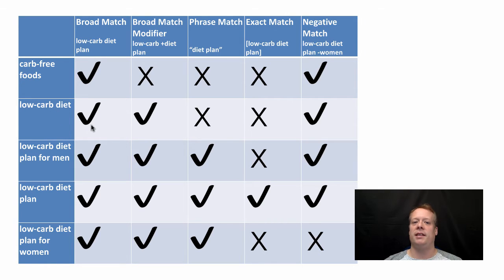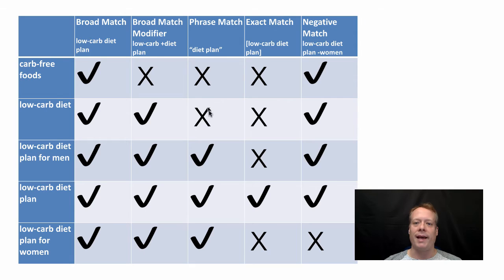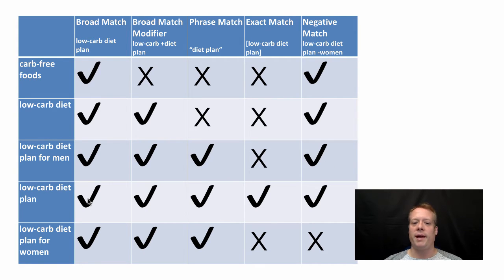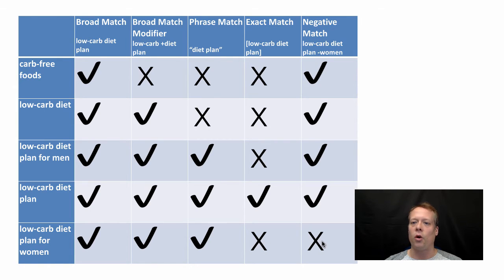'Low carb diet' will match against the broad match because it's contained within it. It will match against the broad match modifier because 'diet' is in it and there's no plus in front of 'plan.' But it won't match against the phrase match because 'plan' is not in there, and it won't match against the exact match. 'Low carb diet plan for men' will match against broad match, broad match modifier, and phrase match because it includes the phrase 'diet plan,' but won't match the exact phrase. The only search that matches all of them is the actual phrase 'low carb diet plan.' And 'low carb diet plan for women' matches broad, modifier, and phrase match, but not the exact match or the negative match.